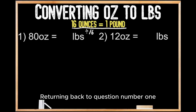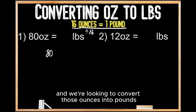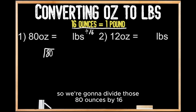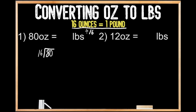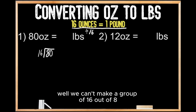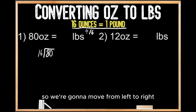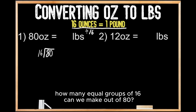Returning back to question number one, we have 80 ounces and we're looking to convert those ounces into pounds, so we're going to divide those 80 ounces by 16. Working through the division steps from left to right, we can't make a group of 16 out of 8, so we move from left to right and think: how many equal groups of 16 can we make out of 80?